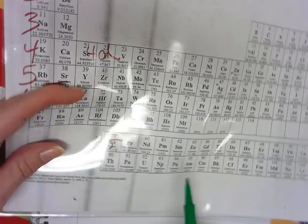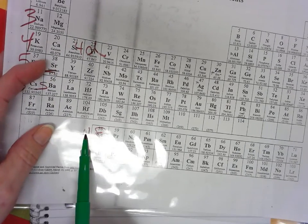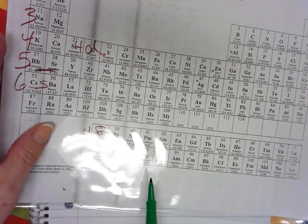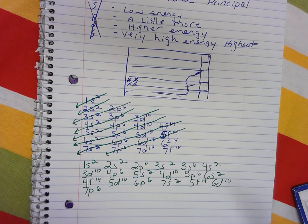these are your orbitals. This is your 4f, and this is your 5f. Notice that you don't ever get to a 6f, so you can stop right there.